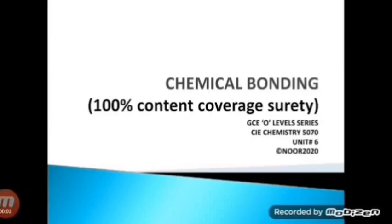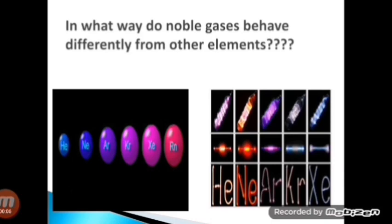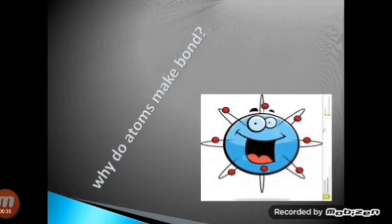Welcome to Conceptual Chemistry GCSE Level Series. This is Unit 6: Chemical Bonding. The element neon is used as a gas in colored lights such as advertisement signs. Neon exists as individual atoms — it will always be found as a monoatomic element. Very few elements exist as individual atoms. Why is this so? Noble gases behave differently from the other elements. In this lecture we are going to explore this before moving towards noble gases.